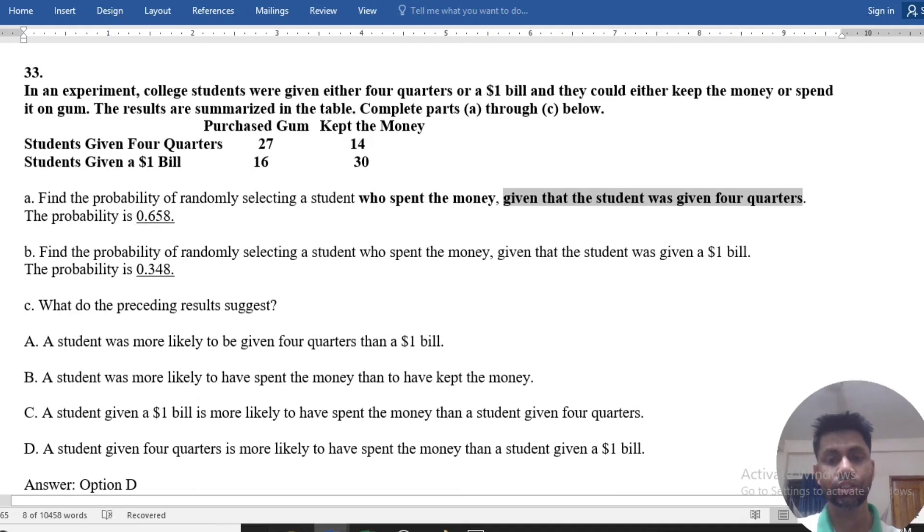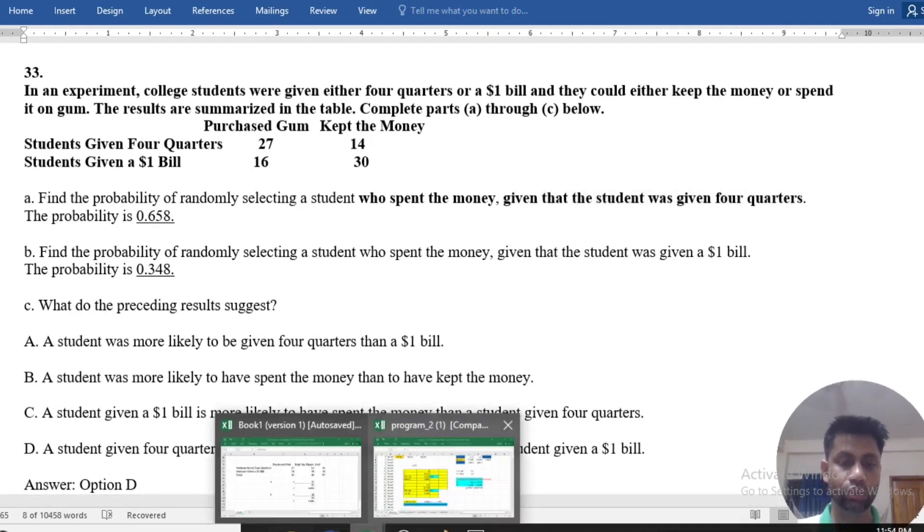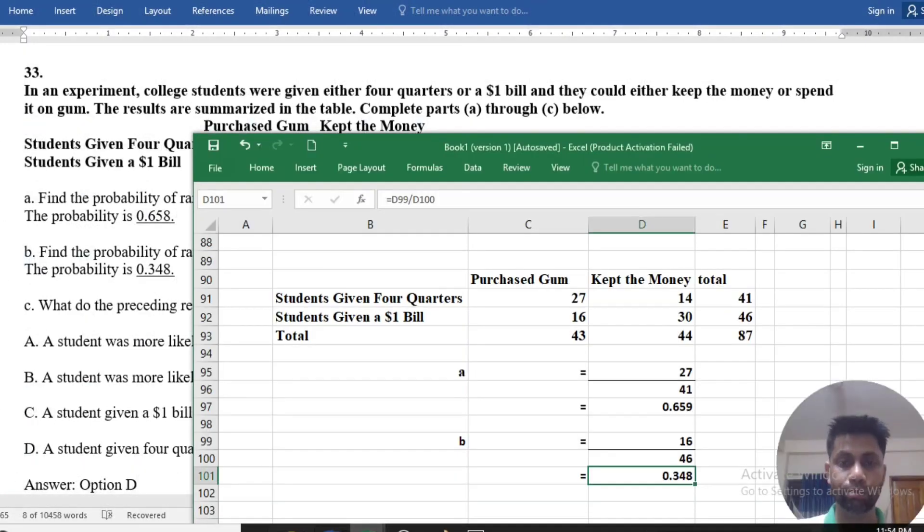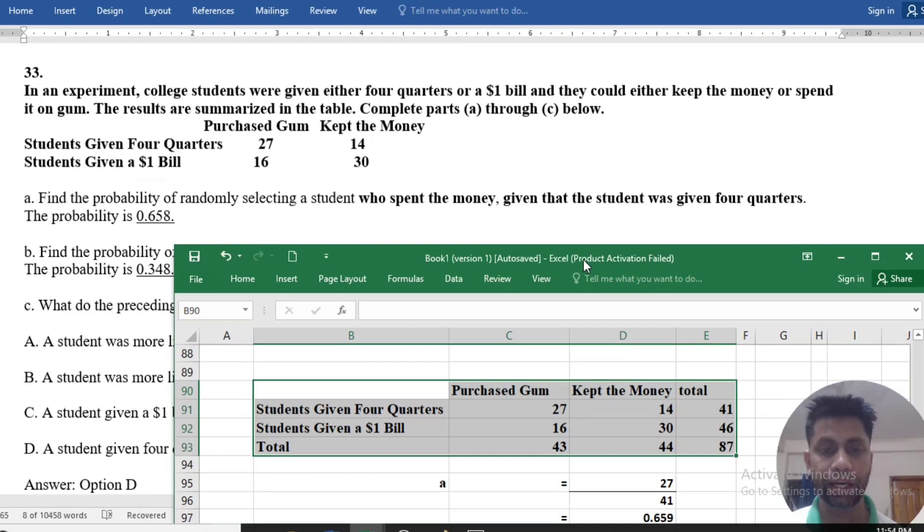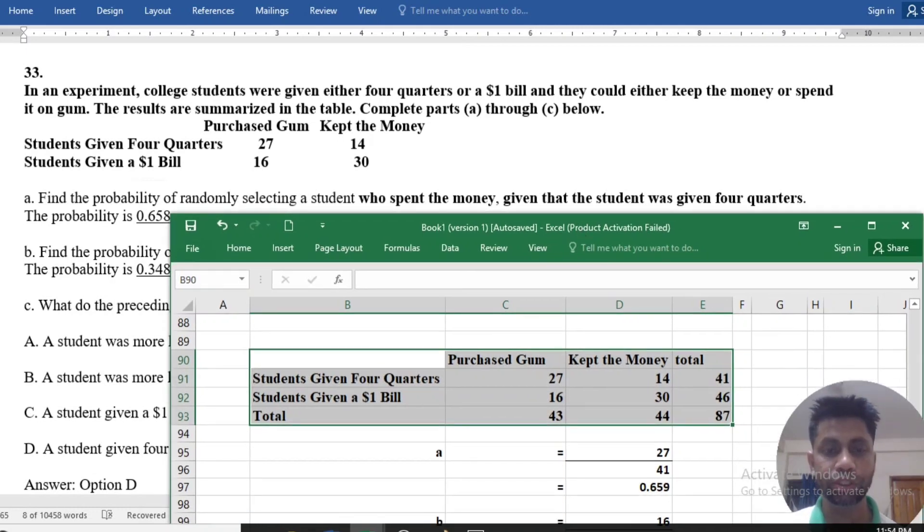We are given specific rules. We have to find the probability. First we have to complete the table. Here is the table, and we complete the table by using the totals. Here is given the probability.